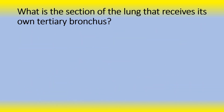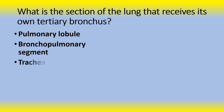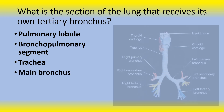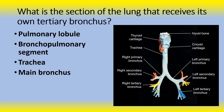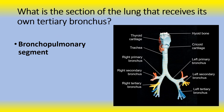Next question: What is the section of the lung that receives its own tertiary bronchus? Is it the pulmonary lobule? Is it the bronchopulmonary segment? Is it in the trachea? Or is it in the main bronchus? You can see the tertiary bronchus there, and the answer is the bronchopulmonary segment. A bronchopulmonary segment is a division of a lobe, and each lobe houses multiple bronchopulmonary segments. Each segment receives air from its own tertiary bronchus and is supplied with blood by its own artery.